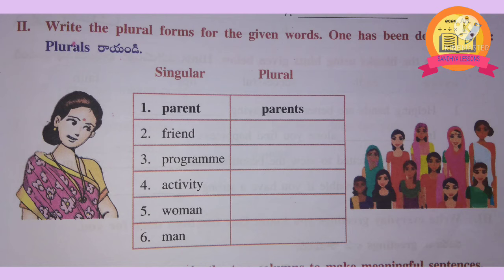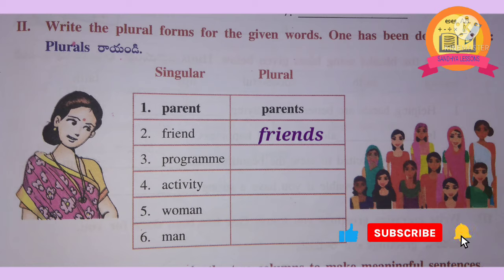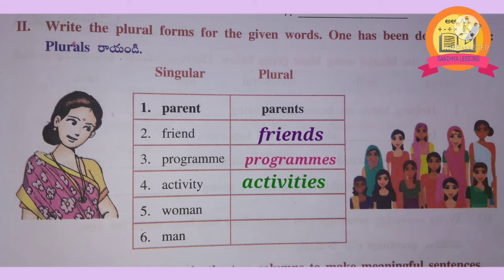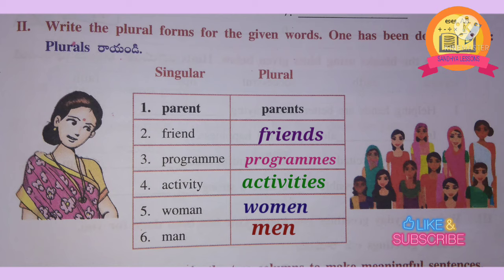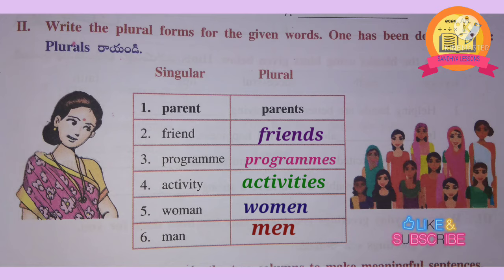2nd Roman: write the plural forms for the given words. Children, we have to write the plural forms: friend – friends, program – programs, activity – activities, woman – women, man – men.